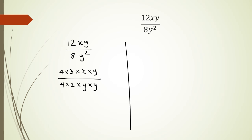And from here, it is just a process of eliminating. So 4 and 4 cancel out each other. Y and y cancel out each other. And what I'm left over with is 3 times x, which is 3x and 2y in the denominator. Now, this is a long winded way of doing this.